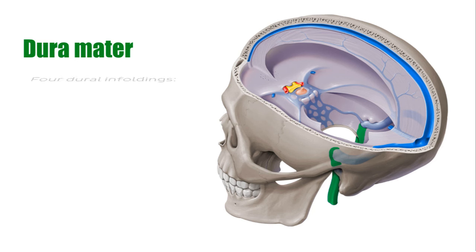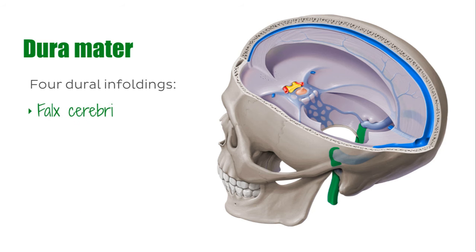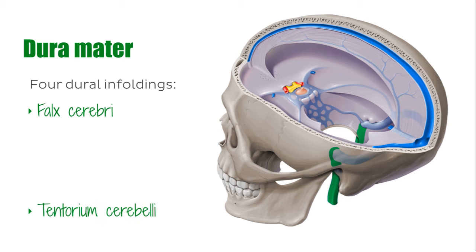The four dural infoldings are the falx cerebri, a sickle-shaped projection of the dura mater, which you can see illustrated by this green arrow, which extends downward into the longitudinal fissure separating the two cerebral hemispheres.